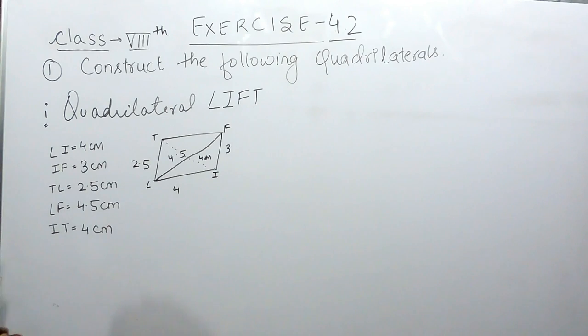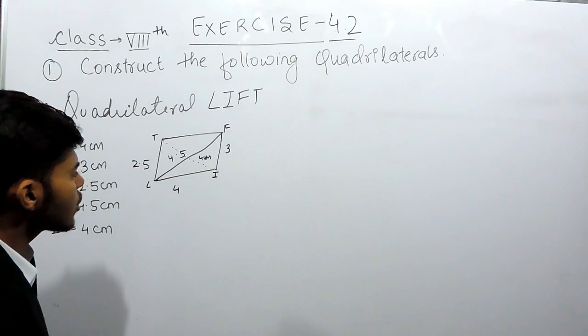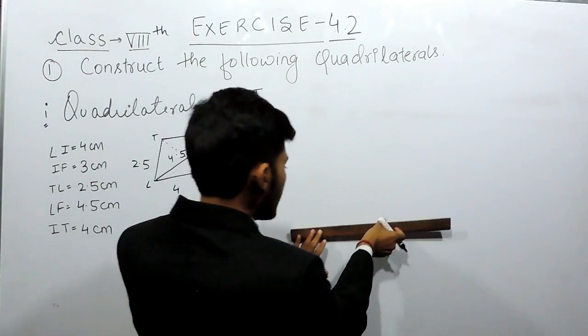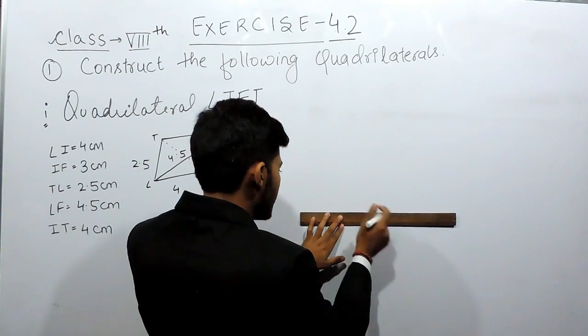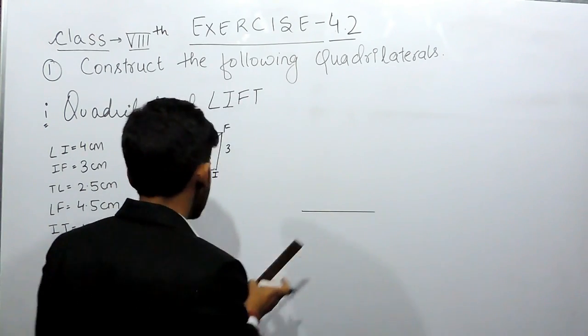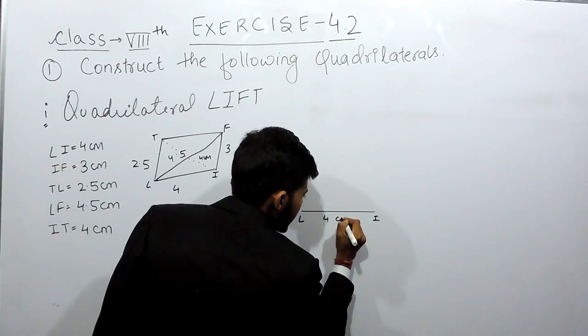Now we have to construct this. First, we will construct the base, which is 4 cm. With the help of a ruler, compass, and pencil, we draw the line segment of 4 cm. This is LI and it is 4 cm.